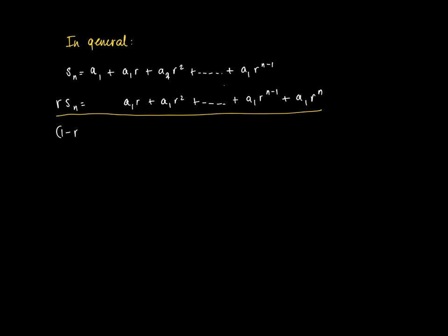Now subtract the equation below from the upper equation. Then we get (1 - r) times S_n on one side, and the other side a1 minus 0, and these terms cancel over here until the final one, which equals minus a1 r^n. So since we assume that r is not equal to 1, we can divide the left-hand side by (1 - r).